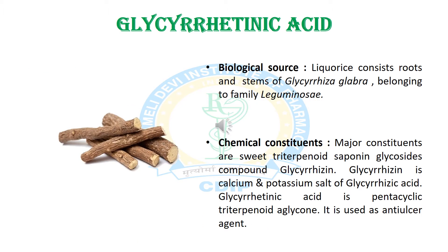The first phytoconstituent we will discuss is glycyrrhizinic acid. The biological source of glycyrrhizinic acid is obtained from the liquorice root or stem of Glycyrrhiza glabra, belonging to the Leguminosae family. The major chemical constituents are triterpenoid saponin glycoside. Glycyrrhizin is the calcium and potassium salt of glycyrrhizinic acid, and glycyrrhizinic acid is a pentacyclic triterpenoid aglycone. It is used as an anti-ulcer agent.